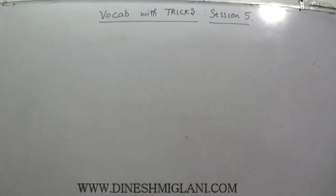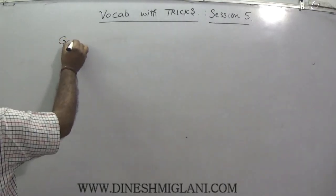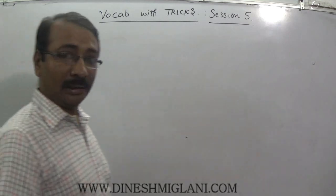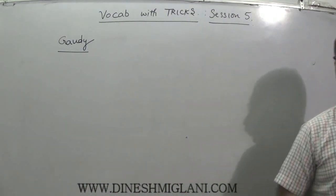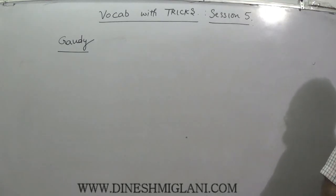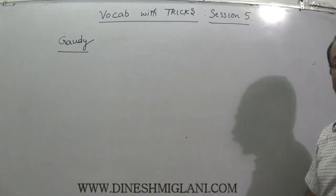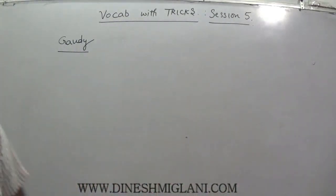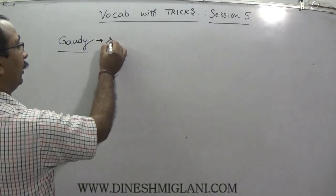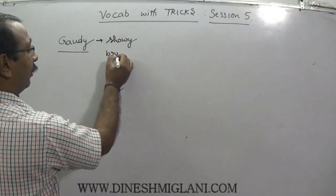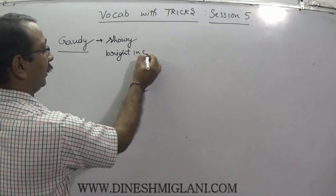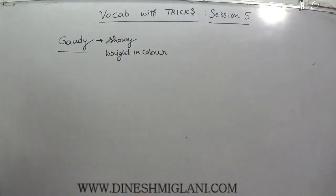Next word is gaudy, G-A-U-D-Y. Gaudy — think of the 'gaudi' used in weddings, which is decorated very attractively, made very bright and shiny. So gaudy means something which is showy, S-H-O-W-Y, or very bright in color. That is the meaning of gaudy — something very bright in color.